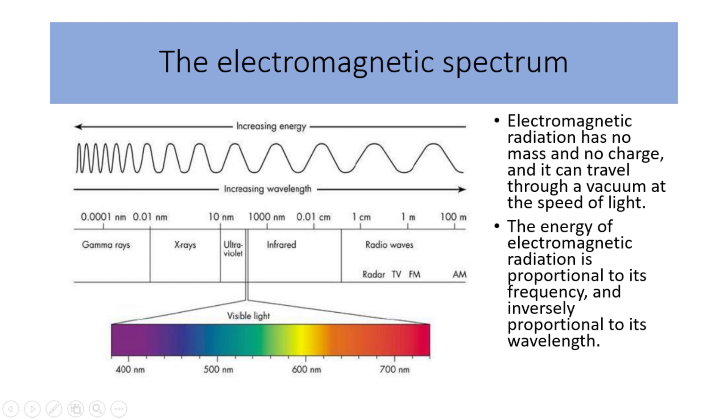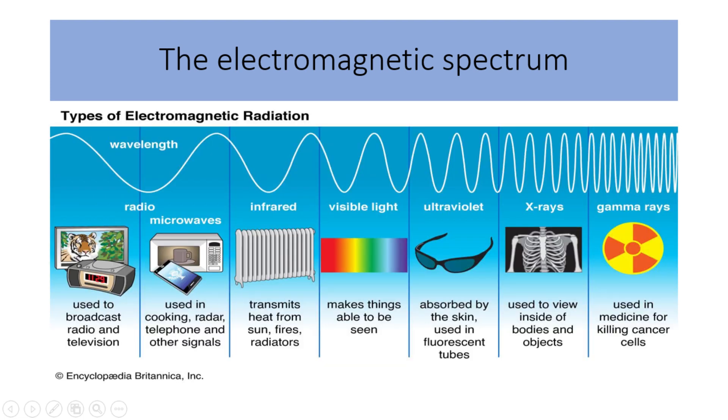As you see in this figure, this is the electromagnetic spectrum. Starting from the longest wavelengths, we have radio waves. Radio waves have the longest wavelengths and lowest frequencies of any form of electromagnetic radiation. They are used for communication, such as radio and television broadcasts, cell phone signals, and satellite communications.